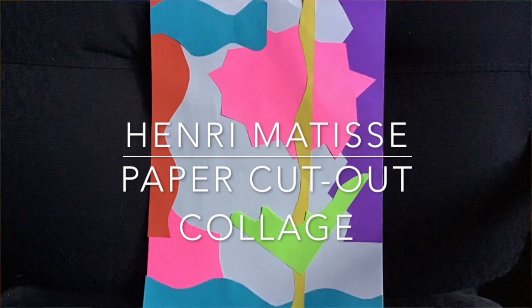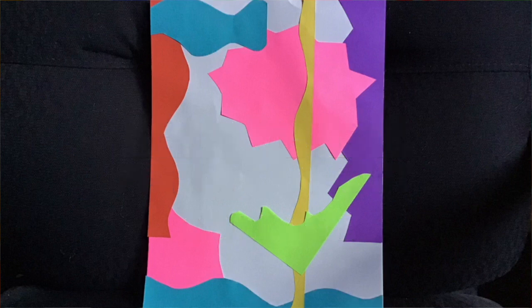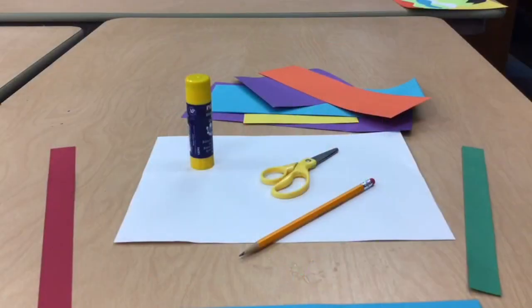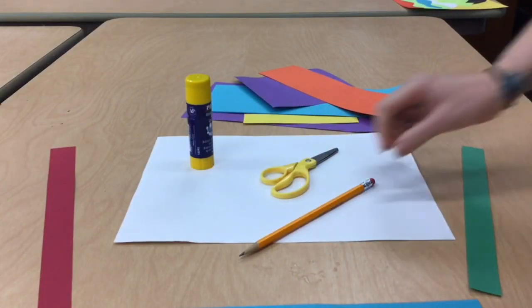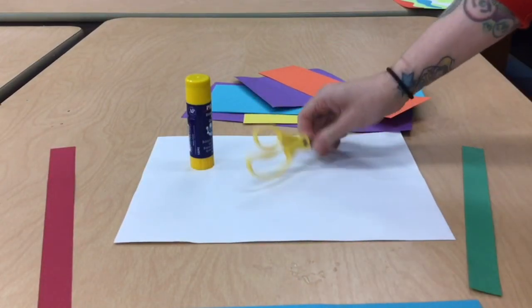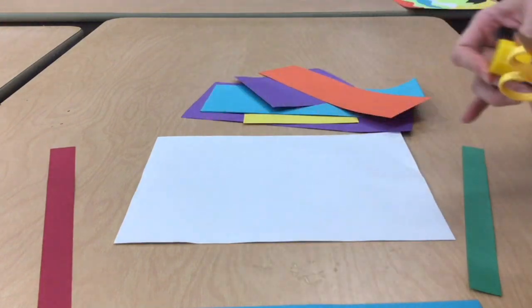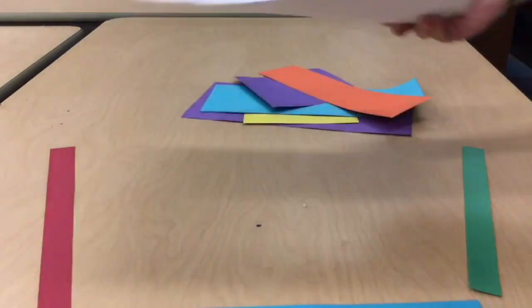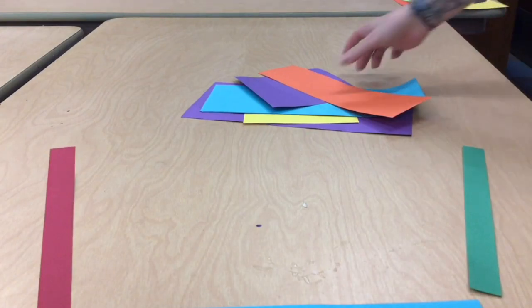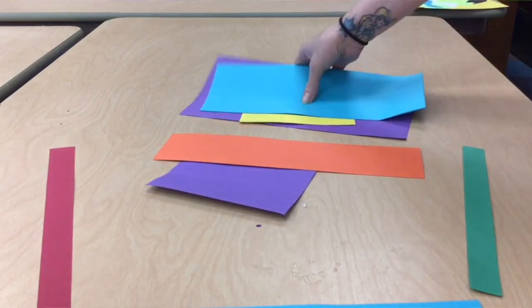Today we are going to learn how to make a Matisse paper cutout collage. The materials you will need today are a pencil, scissors, a glue stick, a blank piece of paper, and some scrap papers to use for your cutouts.